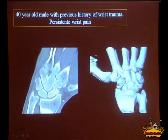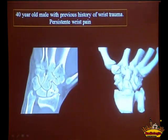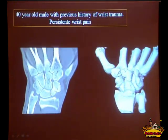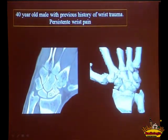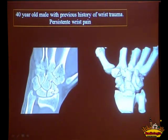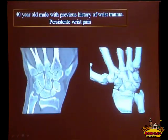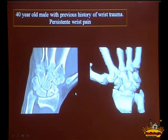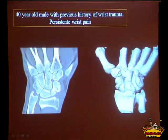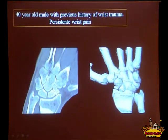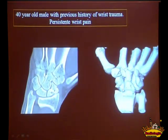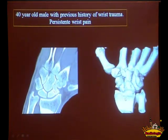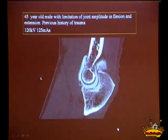Another interesting case: a patient with persistent pain after wrist trauma with an old fracture of the scaphoid bone. Looking at the images, we can understand why this fracture never healed — the distal fragment of the scaphoid impinges against the radial styloid. Looking at the 3D reformat, you can see the fracture line is unstable and opens up as the two bones impinge.